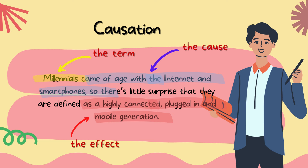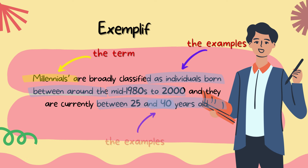We can also provide examples of the term — we call it exemplification. For example, millennials are broadly classified as individuals born between around the mid-1980s to 2000, and they are currently between 25 and 40 years old.